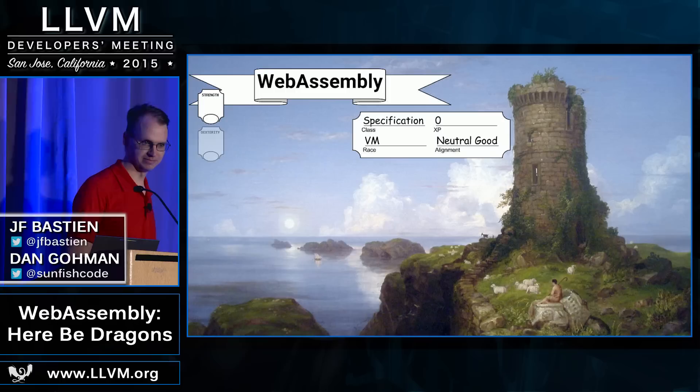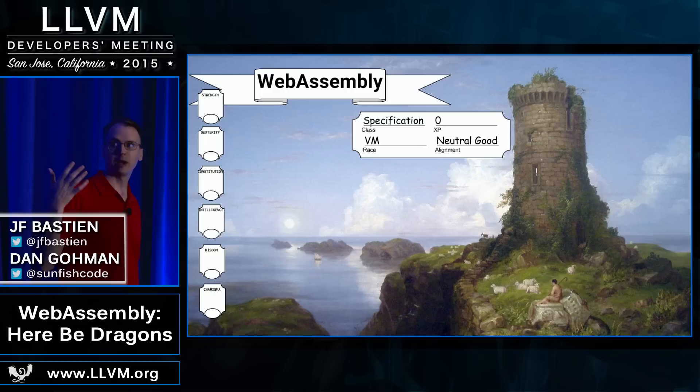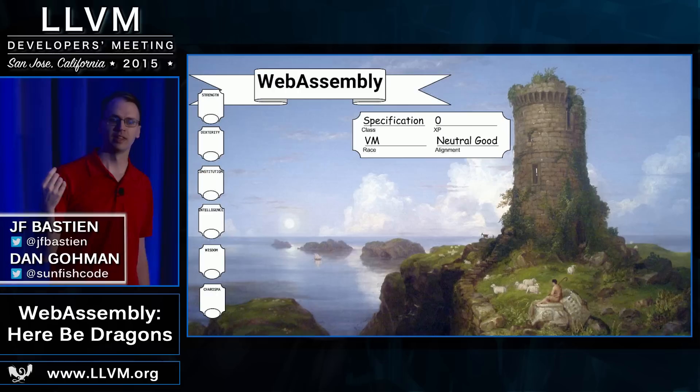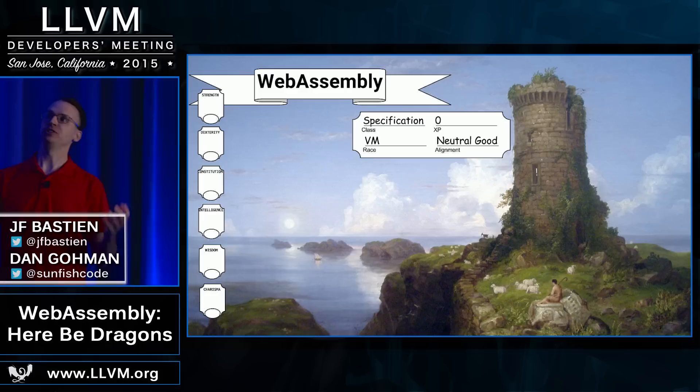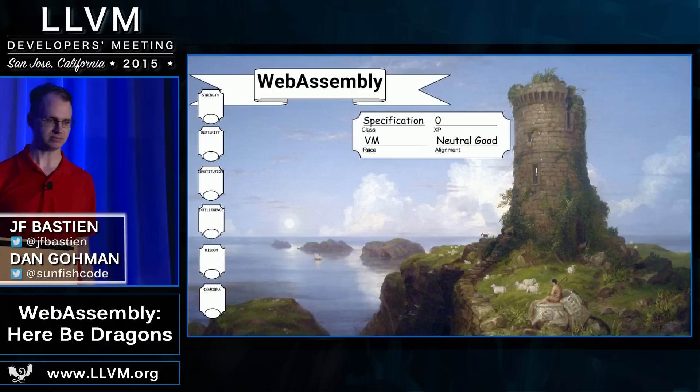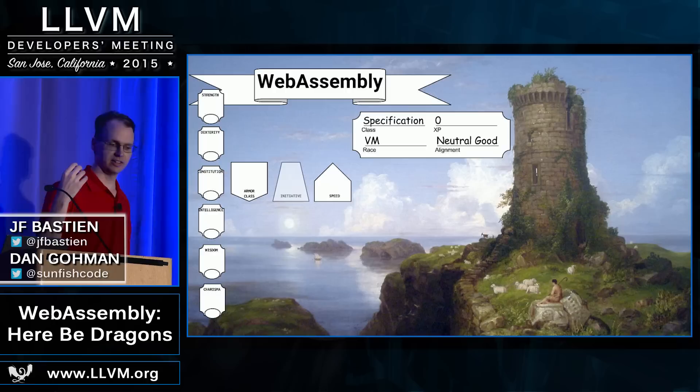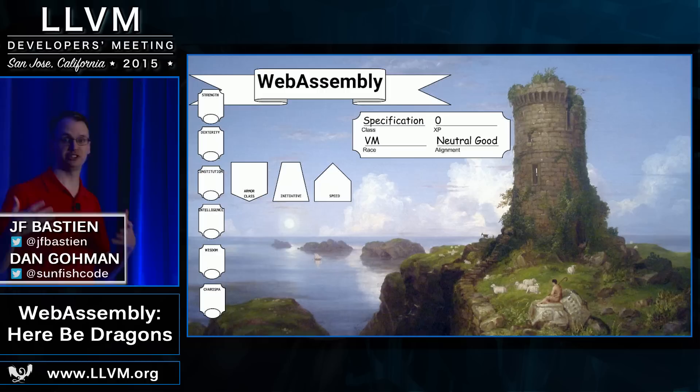WebAssembly's strength is the strength of the web to start with. The web has over a billion users, and this is really where WebAssembly drives its strength from. WebAssembly's dexterity is its portability — we are designing WebAssembly to be portable across platforms, to run the same program across many platforms. WebAssembly's constitution is the security of the platform: the sandboxing, the big issues. Users are safe because we're exposing this thing to the Internet. The entire Internet is going to be our surface area, so we need to have a very strong constitution.